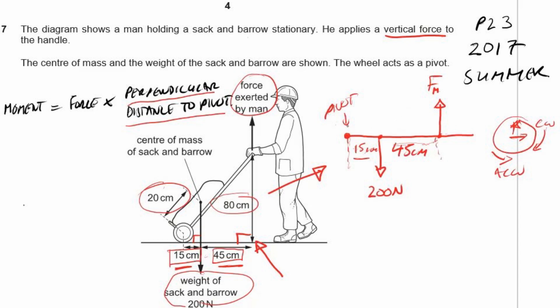But what I need to do is find the distance between the pivot and the force from the man here. And that's just going to be 45 centimetres plus 15 centimetres, which is 60 centimetres.